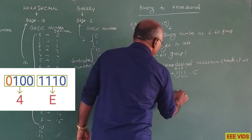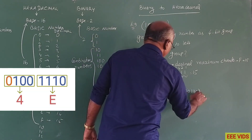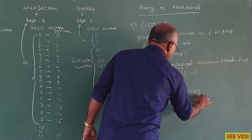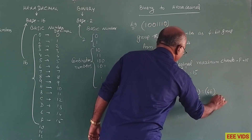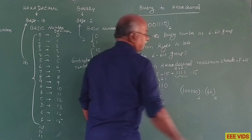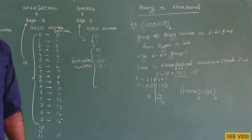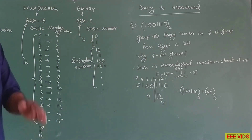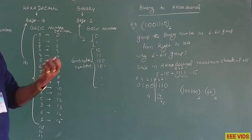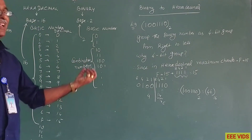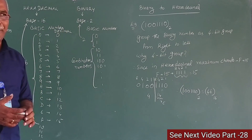So therefore, the binary number 1, 0, 0, 1, 1, 1, 0 in decimal is equal to 4E in hexadecimal. We add the decimal values for each 4-bit group, and those values correspond to the hexadecimal digits.